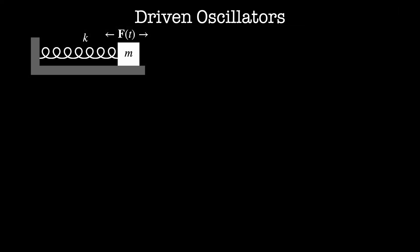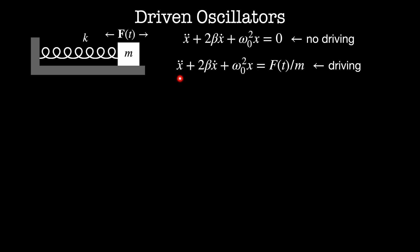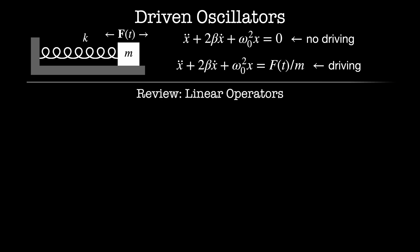In this video we'll explore driven oscillators. We'll start with the regular damped oscillator and see what happens when there's a force accelerating the mass according to some function of time. Our equation of motion is now x double dot plus 2 beta x dot plus omega naught squared x equals the force as a function of time divided by m. Before we get to solving this, I'm going to do a brief aside to discuss linear operators and inhomogeneous equations.